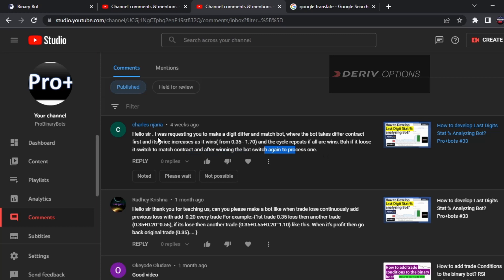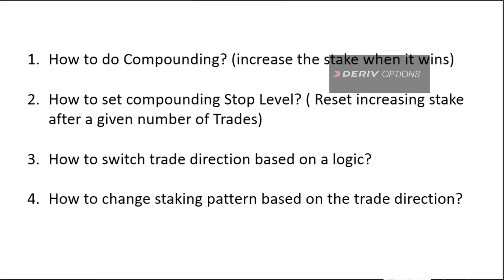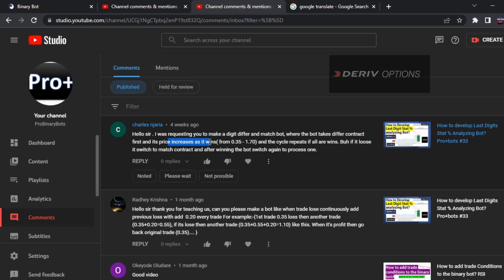Now I will create this video because we have several things to learn. First is how to do compounding — increasing the stake when it wins. Second is how to set a compounding stop level, meaning increasing the stake from trade to trade and after, say, five trades, the bot stops increasing and comes back to the initial stake. Third, I will show how to switch trade direction based on logic — changing the trade from digit differ to digit match.